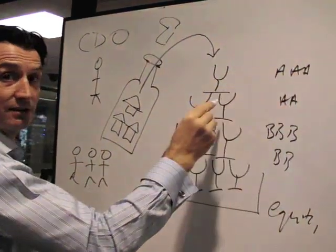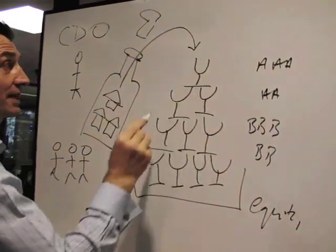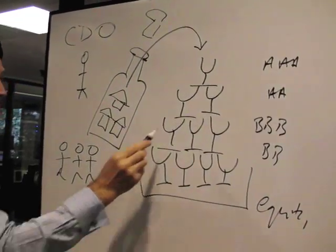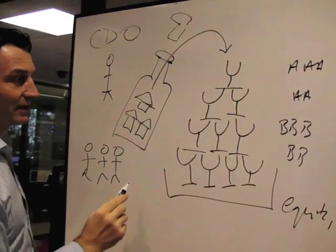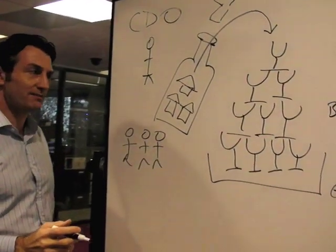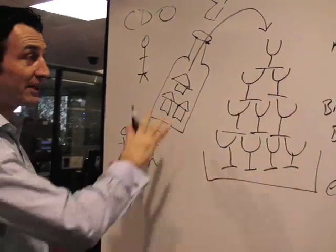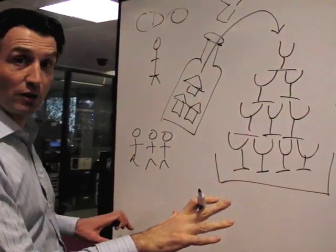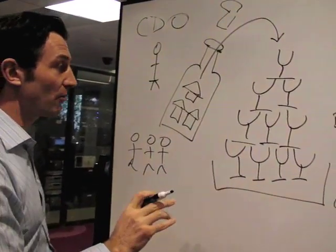Now because these are the least risky and pay the least interest, they get filled up first. Then the second row gets filled up, then the third row gets filled up, finally the fourth row gets filled up, and then the equity tranche, the big silver tray at the bottom gets filled up. And everybody's happy, everybody gets paid, no problems at all. And that's what happened during the housing boom. Everybody got paid.